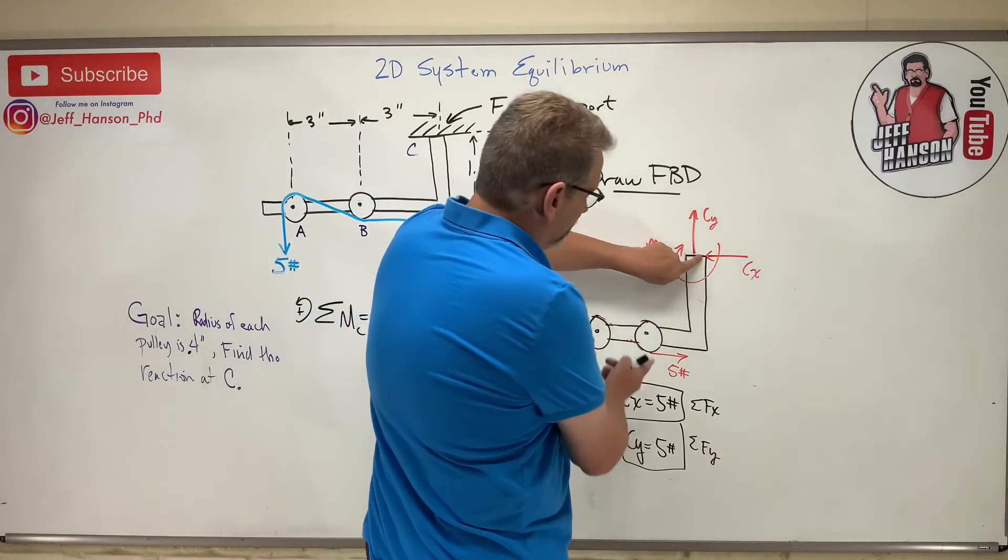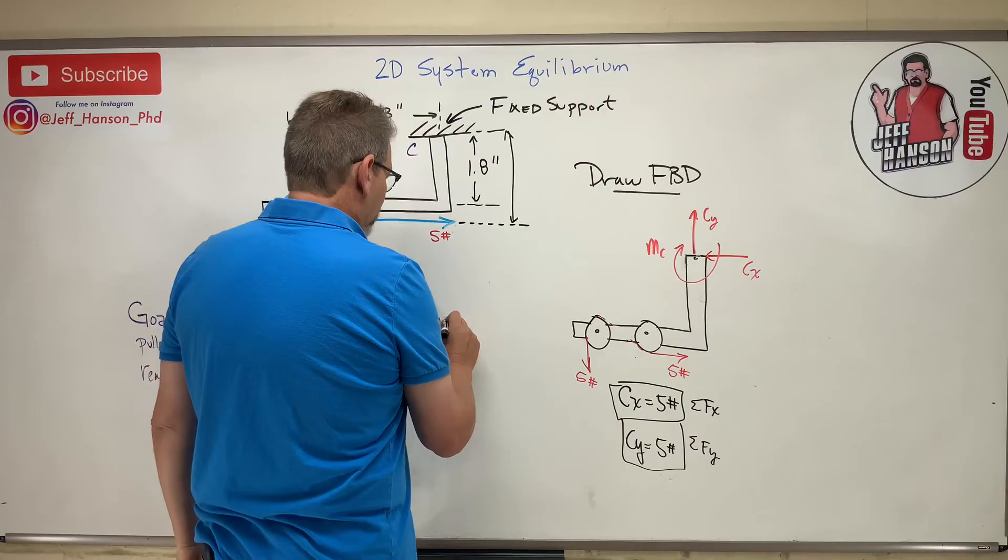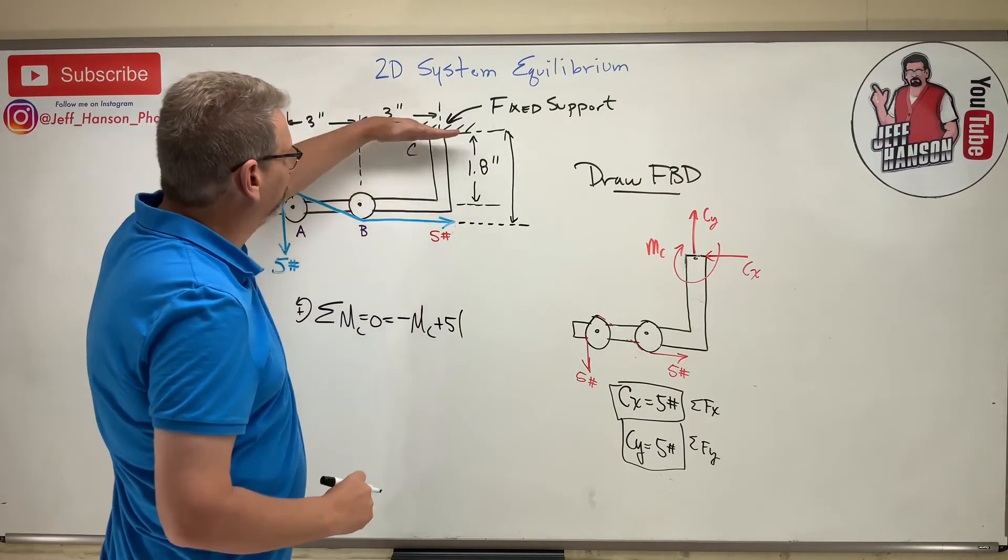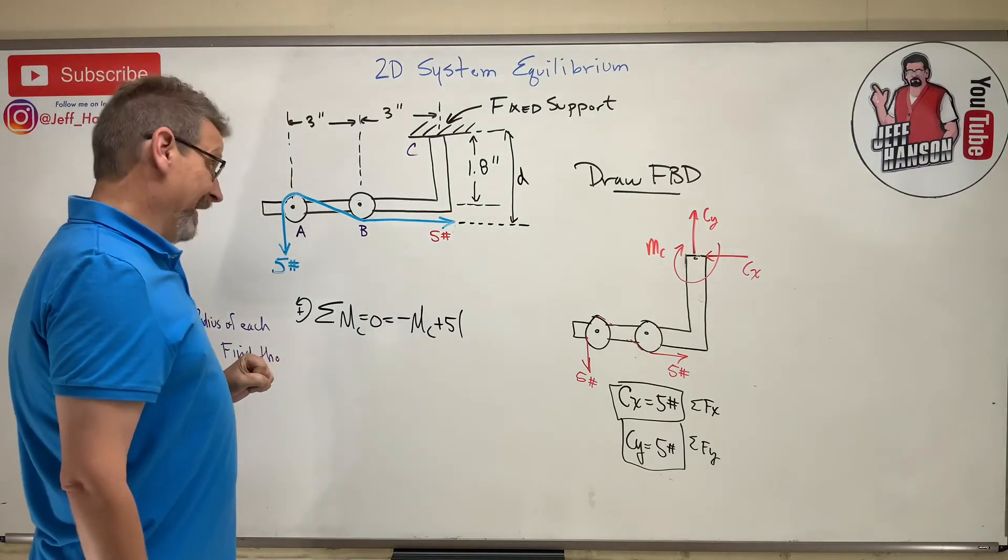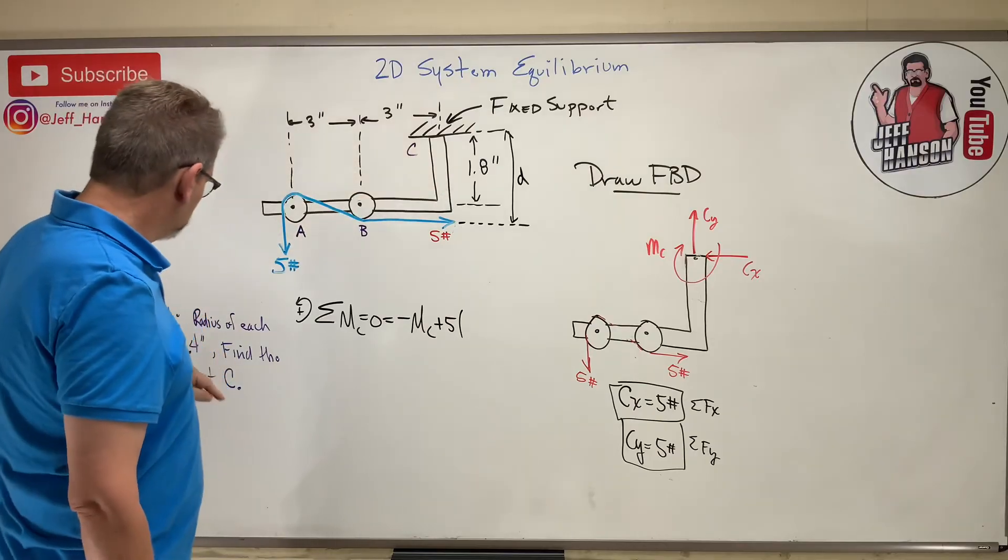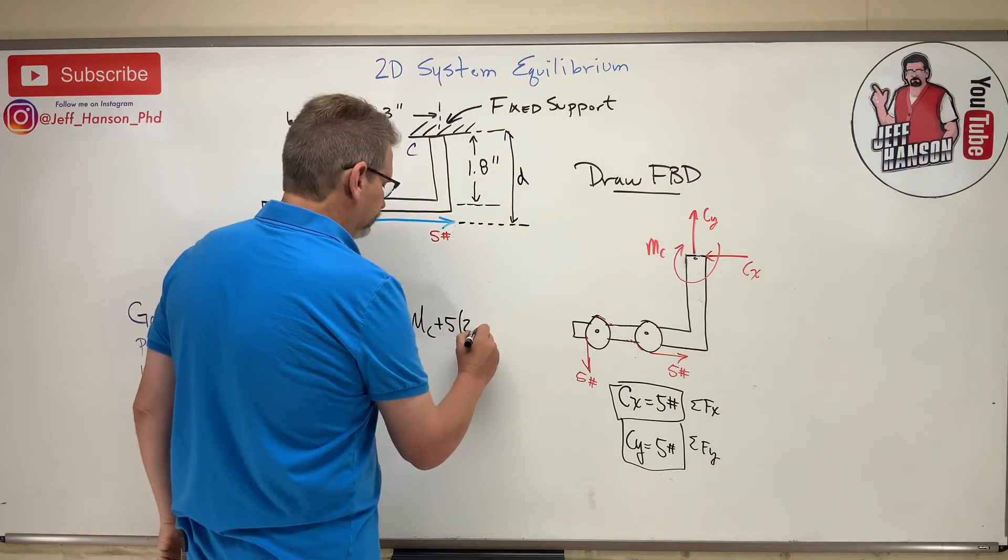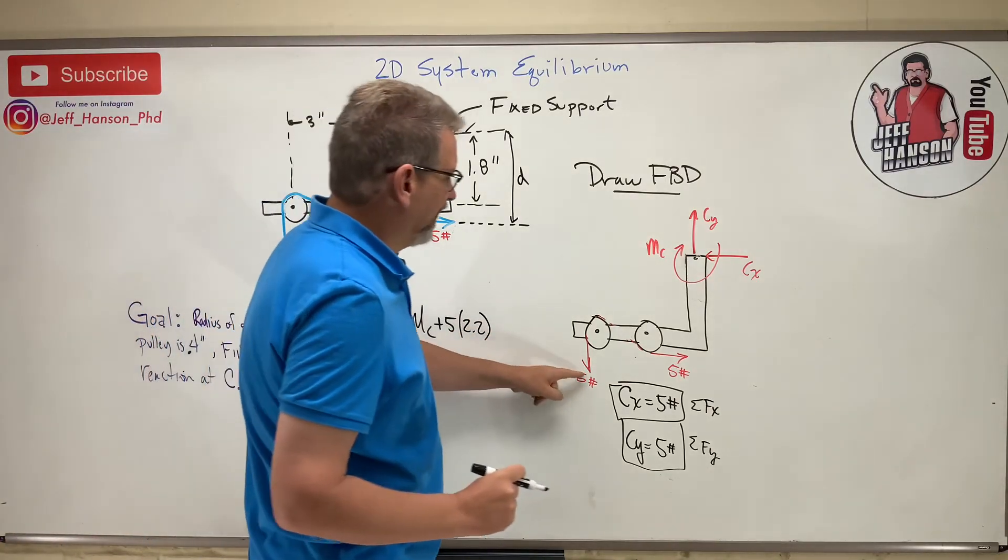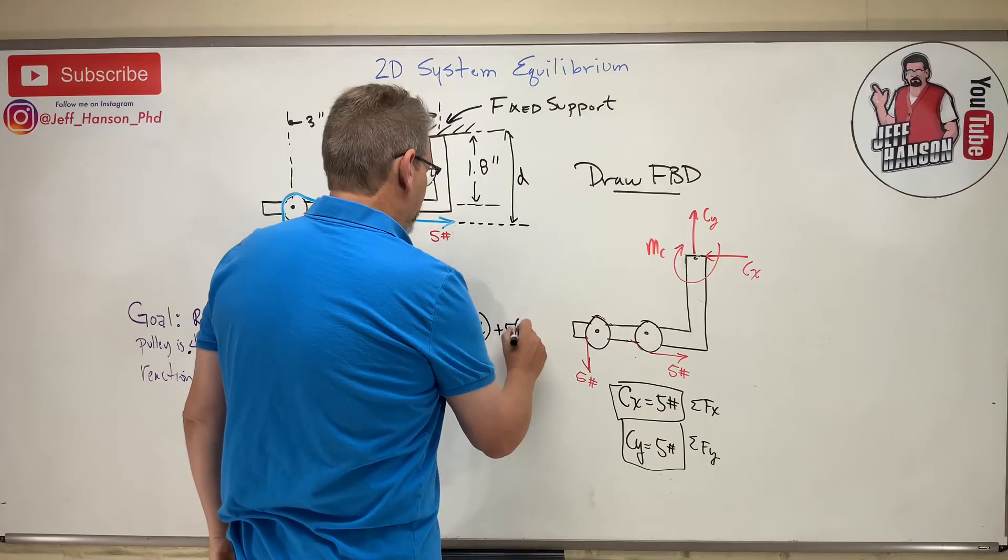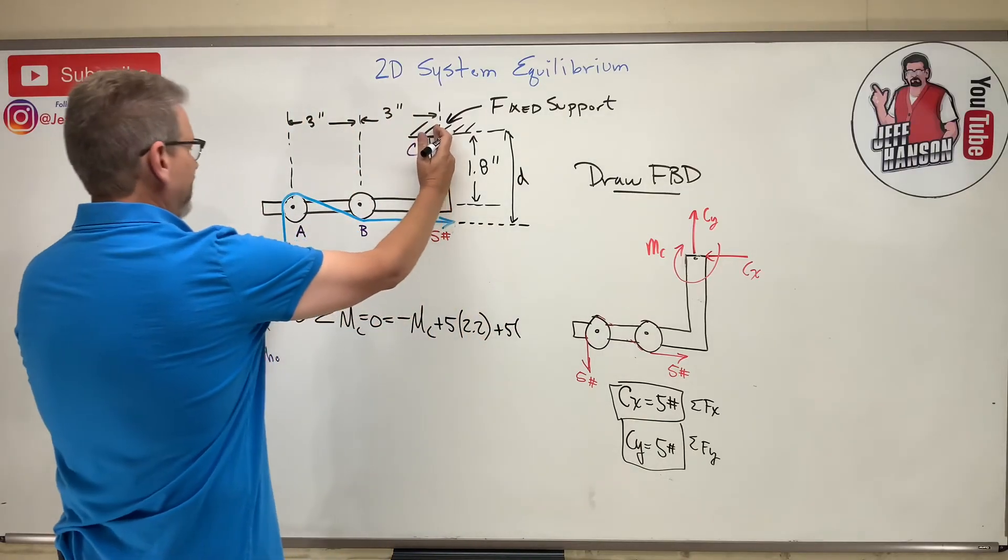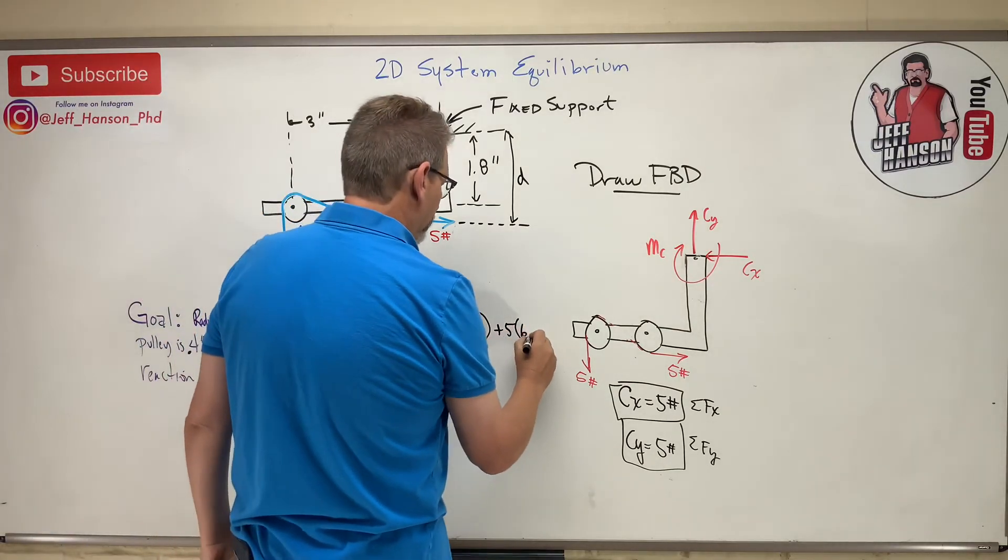So I drew him clockwise so I'm just going to put minus Mc. Now I've got this guy which rotates me - put my finger here - that's positive, isn't it? Plus 5 times how far away. How far is it from C to this guy? What is this distance right there? Well it's 1.8 plus the radius of the pulley which is given as 0.4 inches, so that's 2.2. Now we've got this 5. Put my finger here, that guy rotates - that's positive too, isn't it? Times how far from C to there: it's 6 inches plus another radius, so 6.4.